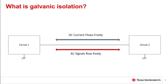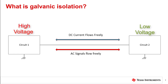What is galvanic isolation? When two devices or circuits are in communication, DC currents and AC signals typically flow freely. In low voltage systems, this is a safe way for two parts of a system to work. But when high voltage enters into one or more parts of the system, freely flowing DC current and some AC signals can be dangerous. The presence of high voltages can introduce significant potential differences, which may cause damaging DC currents or unwanted AC currents to flow to other parts of the system, causing errors or hazardous conditions of operation.